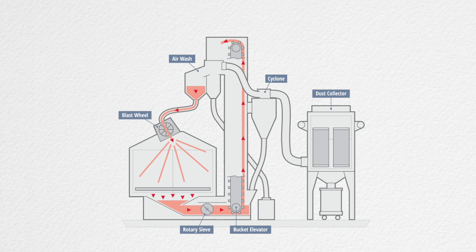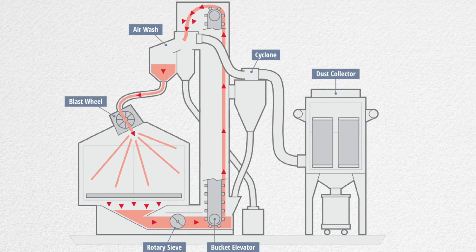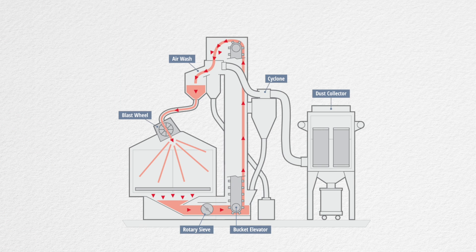The reclaim process begins here. At this point, three things happen, all of which are powered by the dust collector. Reusable media goes directly back to the wheel supply hopper, while the air wash pulls out medium to fine waste into its own container.